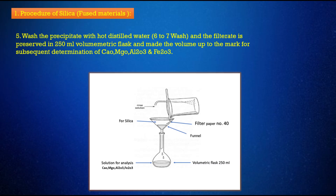Step 5: Wash the precipitate with hot distilled water, 6-7 washes. The filtrate is preserved in a 250 milliliters volumetric flask and made up to the mark for subsequent determination of lime, magnesium, alumina, and iron.